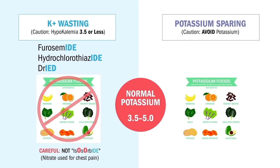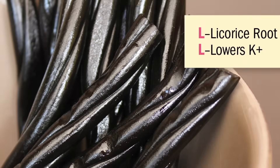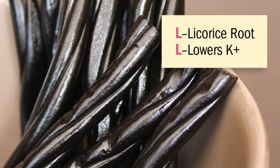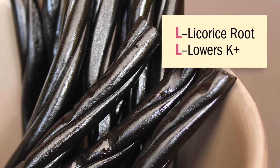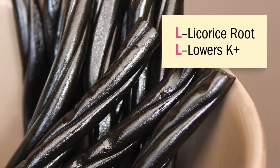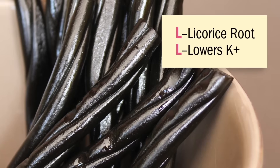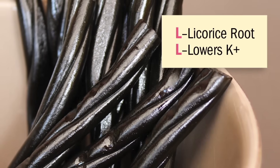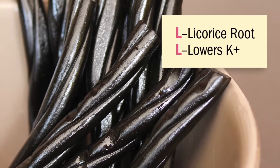Anything less than 3.5 is a big no-no — we don't give the drug. We encourage patients to eat melons, bananas, green leafy vegetables, and even liver. A big no-no: avoid licorice root, which lowers potassium, like that found in black licorice candy. That's a common select-all-that-apply question — remember the double L's: licorice lowers potassium.